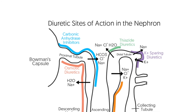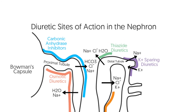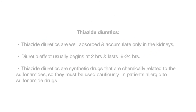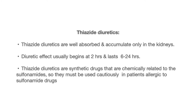Thiazide diuretics are well absorbed and accumulate only in the kidneys. Diuretic effects usually begin at 2 hours and last 6 to 24 hours. Thiazide diuretics are synthetic drugs that are chemically related to the sulfonamides, so they must be used cautiously in patients allergic to sulfonamide drugs.